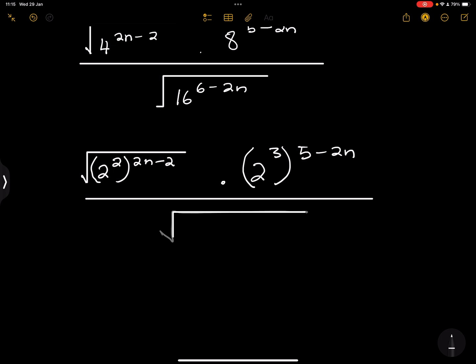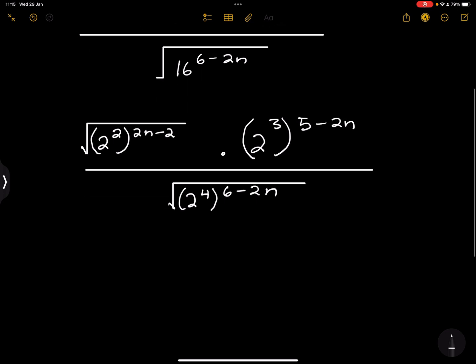Now 16 can simply be written as 2 to the exponent of 4, right? 2 times 2 times 2 times 2 gives us 16. And that gives us 6 minus, raised to the power rather, as 6 minus 2n.